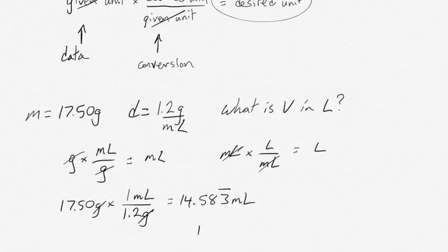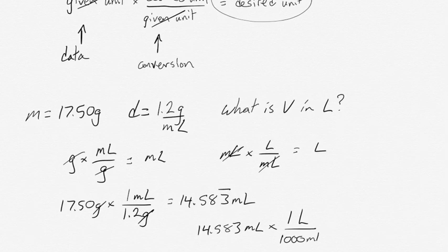We can convert that into liters. There's one liter for every 1,000 milliliters. Our milliliters cancel. And we're left with 0.014583 repeating liters.